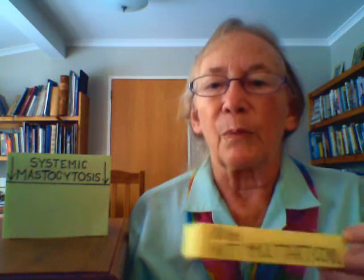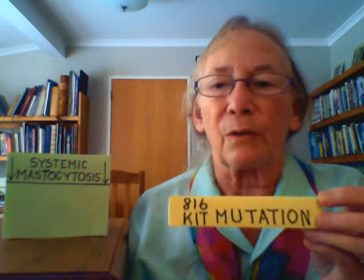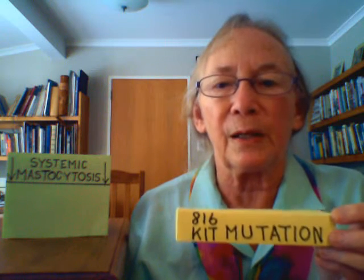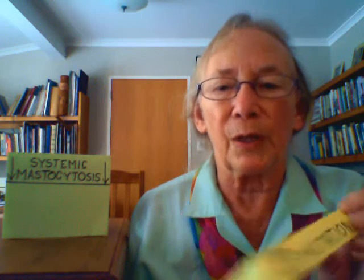Second, in bone marrow aspirate, another internal organ, or blood, a mast cell protein called C-kit is abnormal and has what is referred to as the 816-kit mutation.